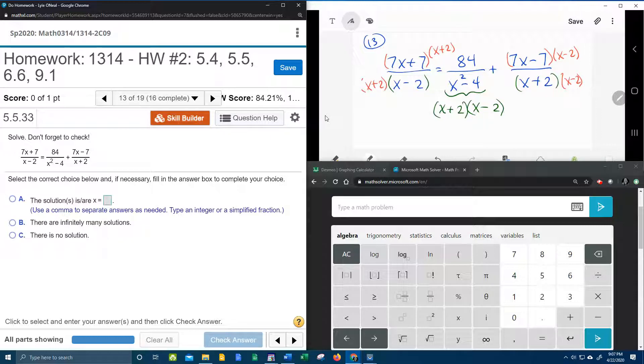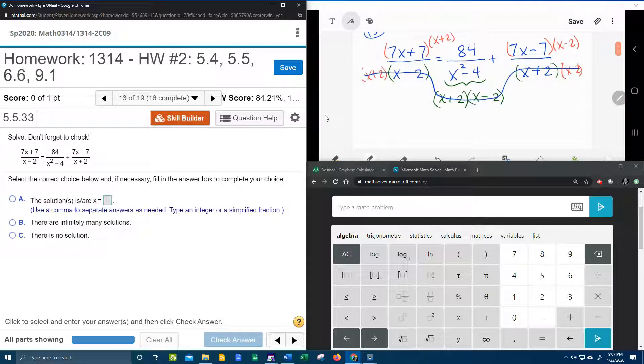So now, do all of the denominators have the same stuff? We now have an x plus 2, x minus 2, x plus 2, x minus 2, and an x plus 2, x minus 2. So remember, once we get all the denominators to match, you can effectively cancel them out. And what is that going to leave me with? That's going to leave me with 7x plus 7 times x plus 2 equals 84 plus 7x minus 7 times x minus 2.